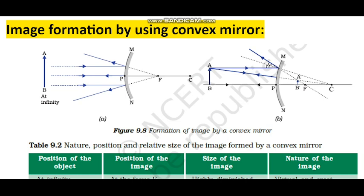Now we will do the image formation by using a convex mirror. In this case we will discuss two cases in the convex mirror. In a convex mirror, the diverging mirror, you can place the object anywhere and the image will be made. The image will be virtual and erect. After reflection, rays of light do not actually meet — we have to make an imaginary intersection to obtain the image of the object.